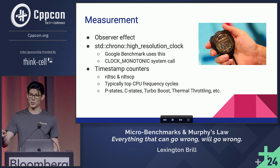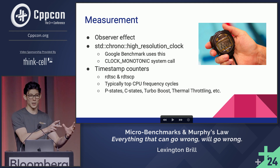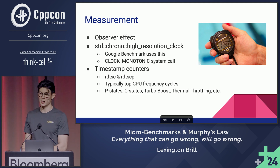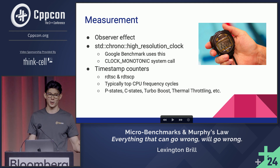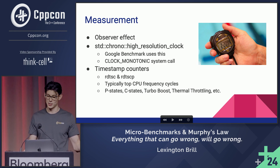To make sure that what you're benchmarking is aligned with the timestamp counter, you want to do things such as disabling P states, C states, turbo boost, thermal throttling, or anything that will keep your CPU from running at max frequency.